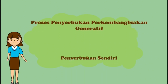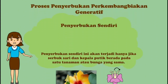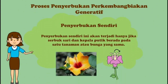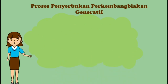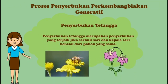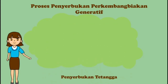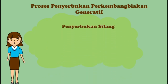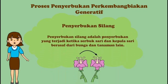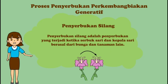Berikut adalah cara dalam penyerbukan perkembangbiakan generatif pada tumbuhan. Yang pertama, penyerbukan sendiri, yaitu jika serbuk sari dan kepala putik berada pada satu tanaman atau bunga yang sama. Yang kedua, penyerbukan tetangga, yaitu penyerbukan yang terjadi jika serbuk sari dan kepala sari berasal dari pohon yang sama. Dan yang terakhir, penyerbukan silang, yaitu penyerbukan yang terjadi ketika serbuk sari dan kepala sari berasal dari bunga dan tanaman lain.